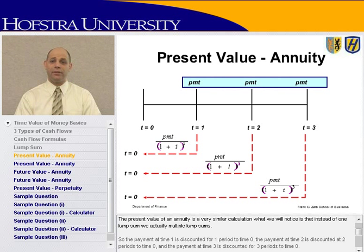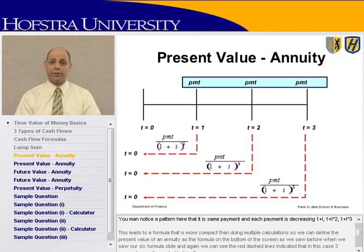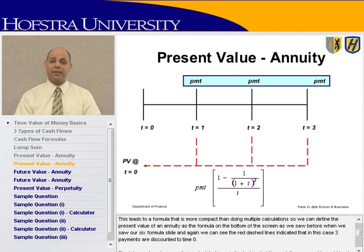The present value of an annuity is a very similar calculation. Instead of one lump sum, we have multiple lump sums. The payment at time 1 is discounted for one period to time 0; the payment at time 2 is discounted for two periods; and the payment at time 3 is discounted for three periods. You may notice a pattern: it's the same payment divided by 1 plus I, 1 plus I squared, 1 plus I cubed. This leads to a compact formula shown at the bottom of the screen, where the red dashed lines indicate three payments discounted to time 0.